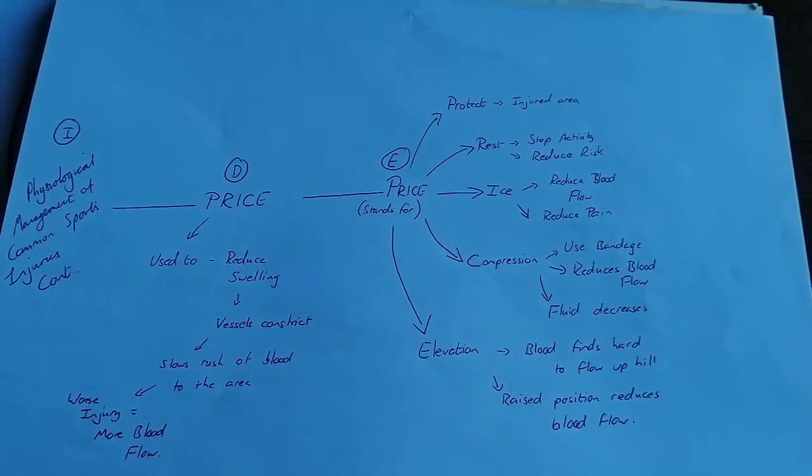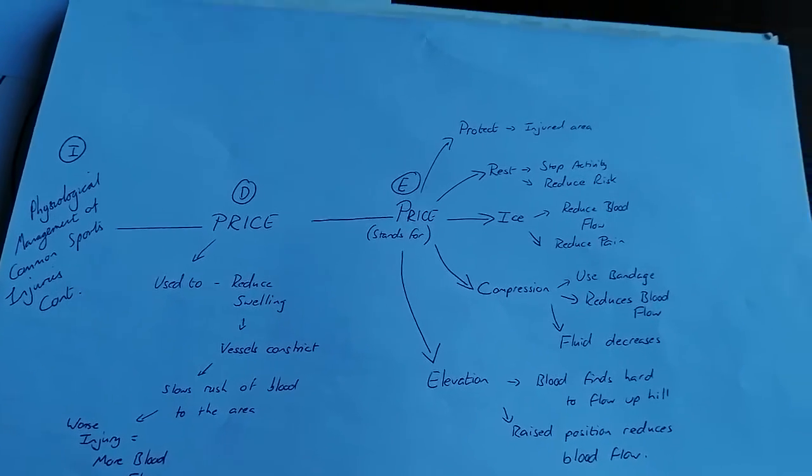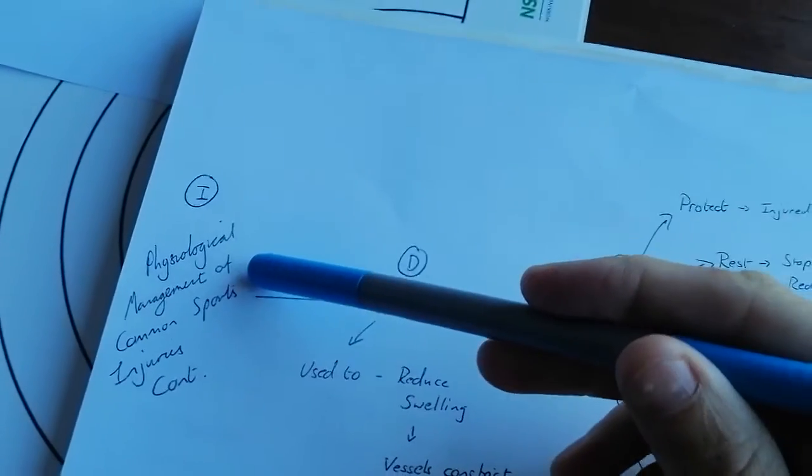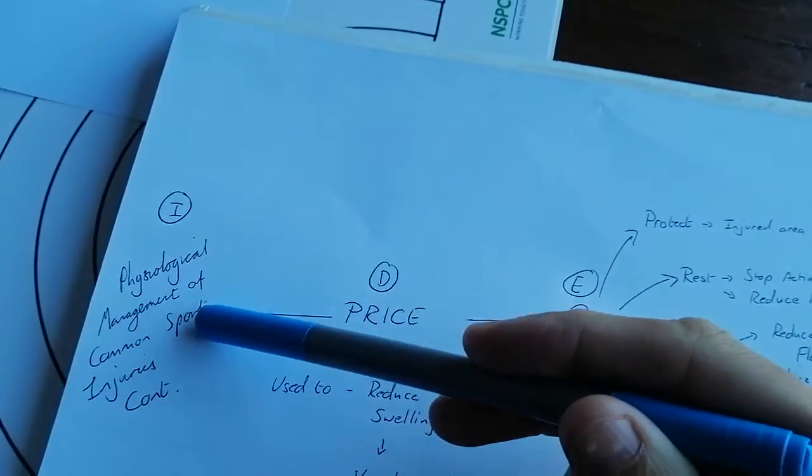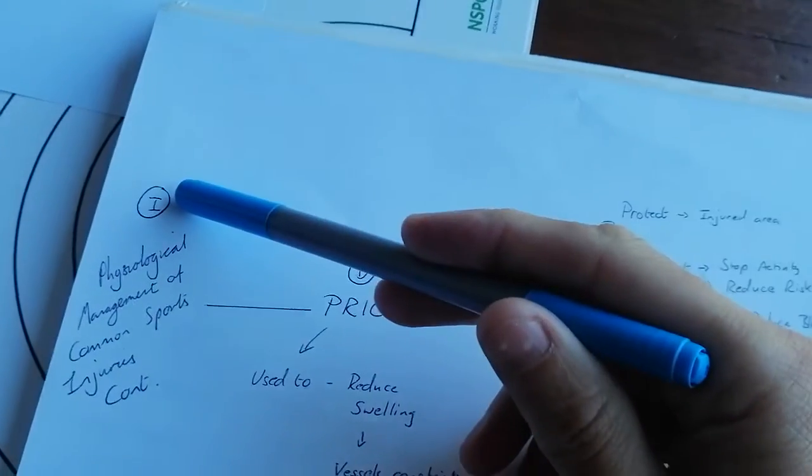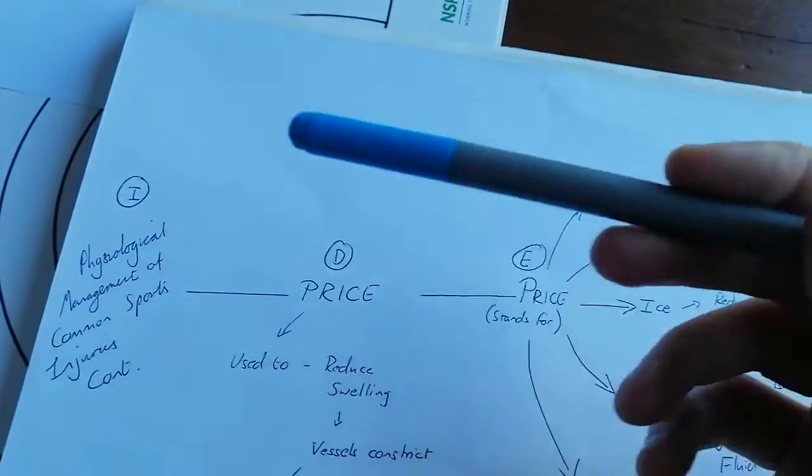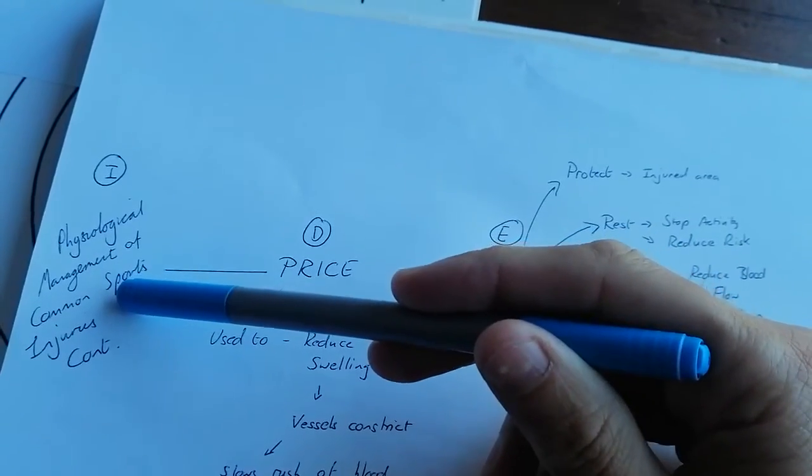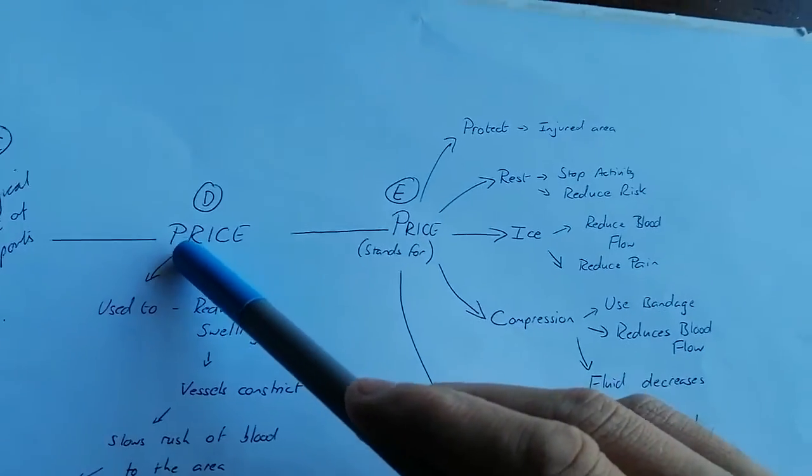Now this should form one paragraph. Okay, so I'll start at the beginning. So, down here we've got physiological management of sports injuries. Okay, it begins with an I, which means that this is a title or a subtitle and should be written in green.